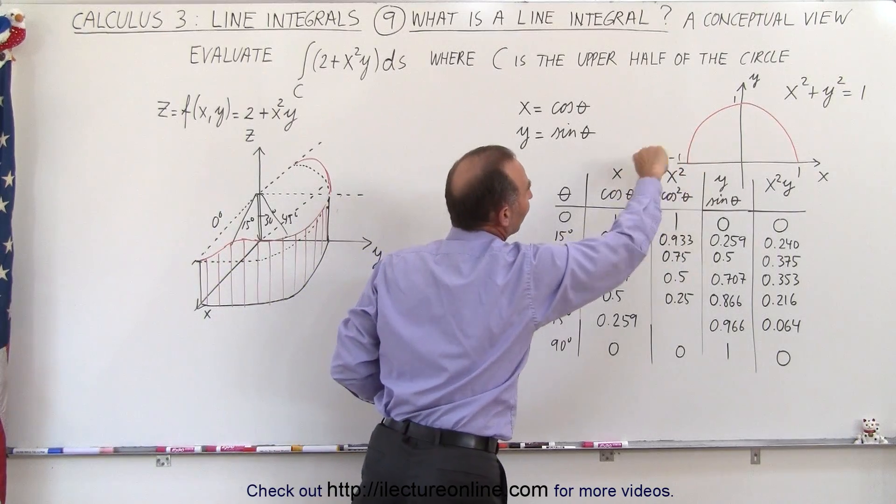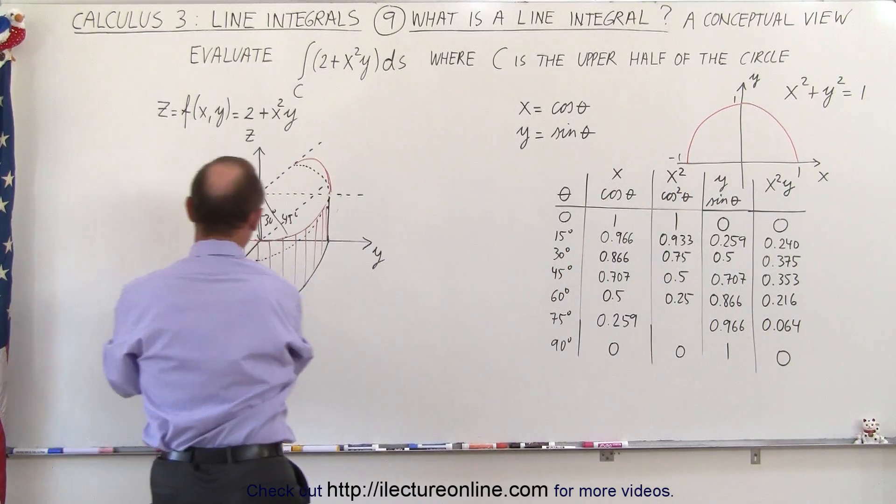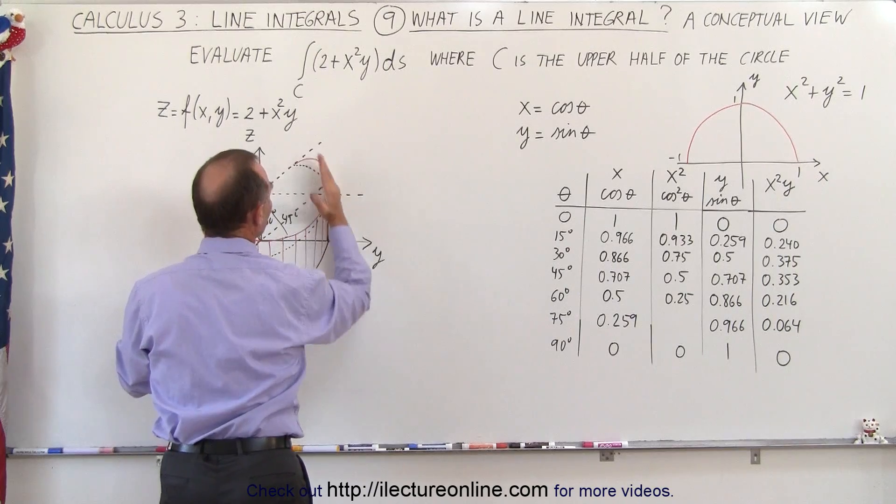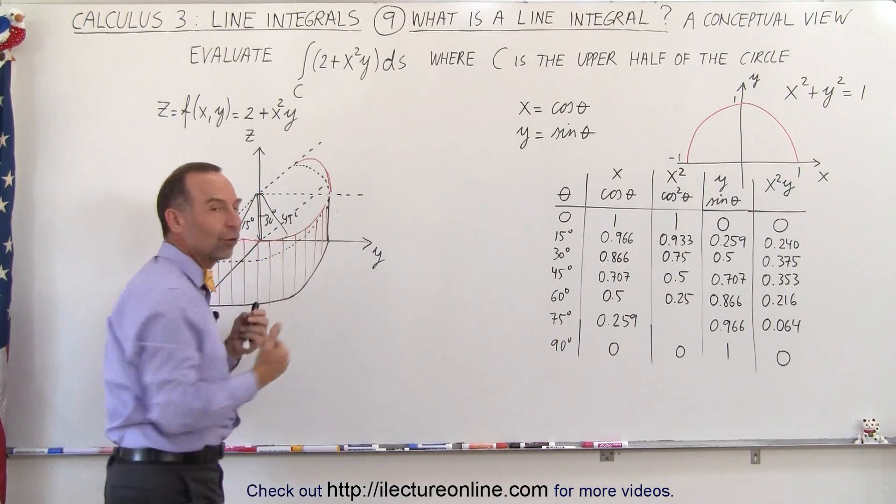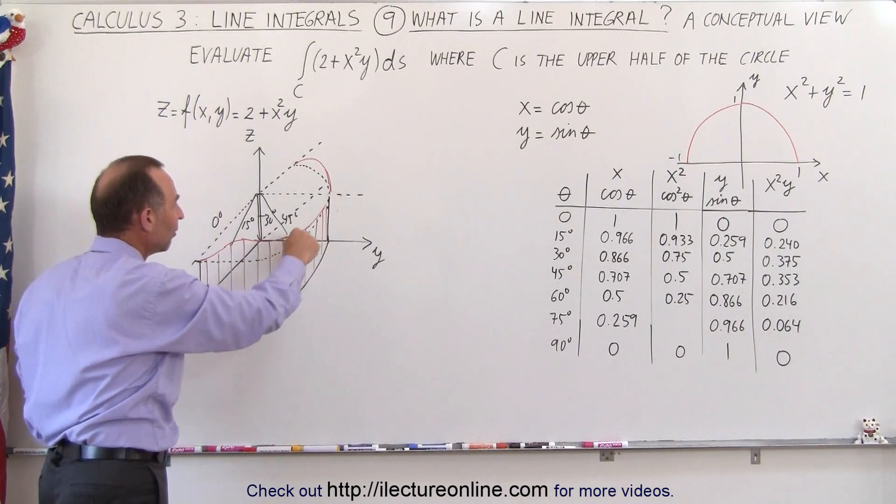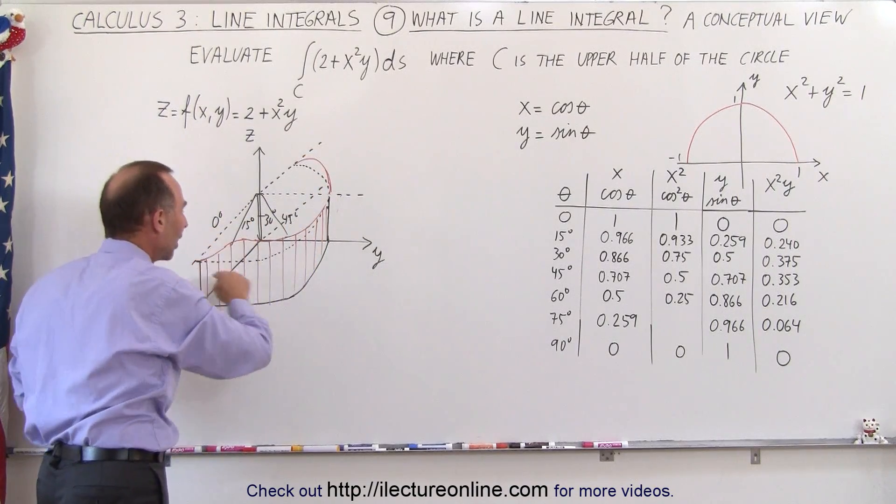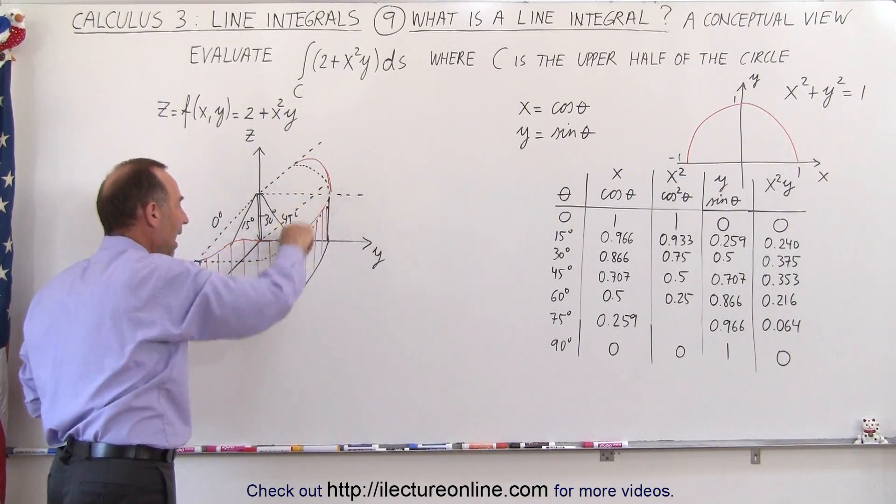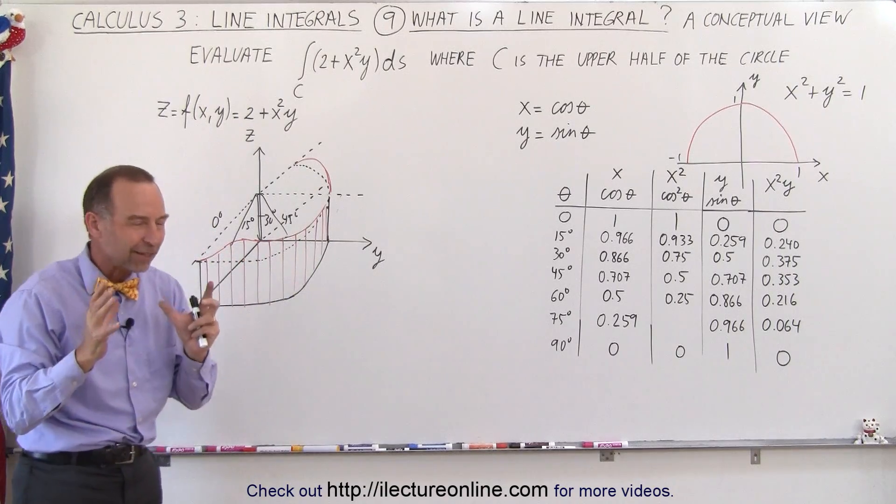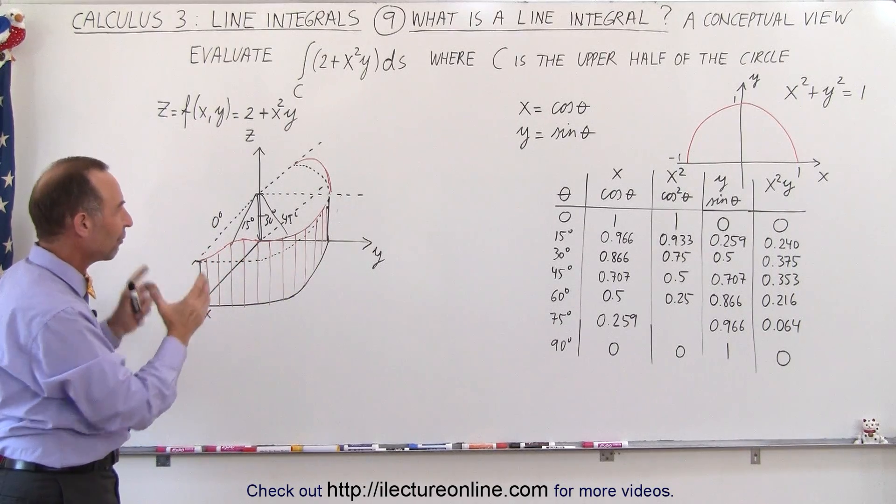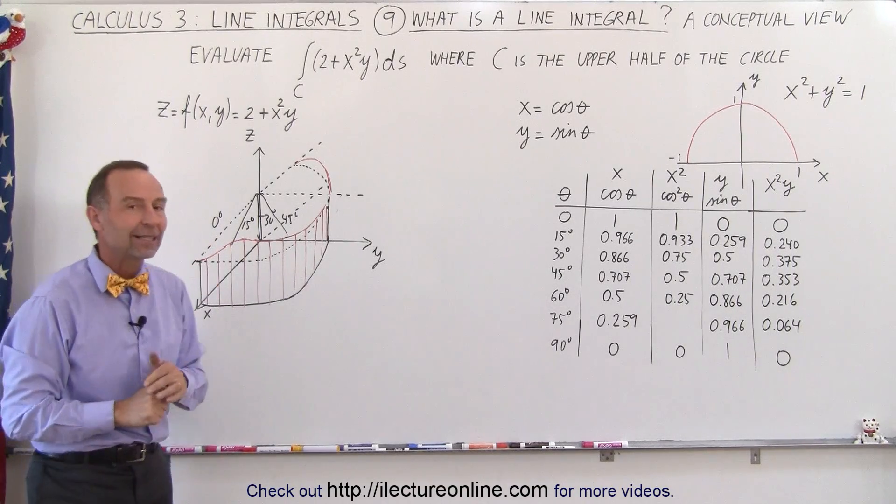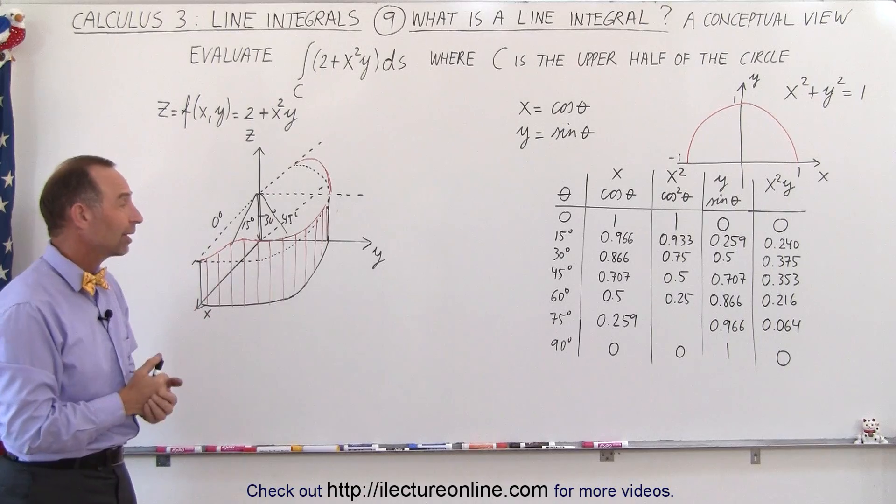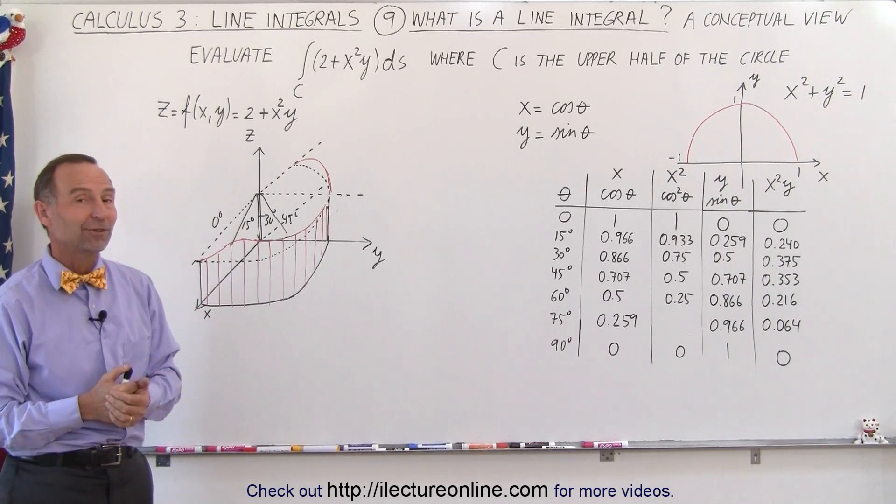Well in this case we only want to go half a circle and that means we're going to integrate and get the area of this half of that curtain, so to speak, that hangs down from the value of the function as we integrate along half that circle. And so that's the conceptual perspective of what we're trying to do here. On the next video we're actually going to integrate this and show you how to find the result of that particular line integral and that's how it's done.